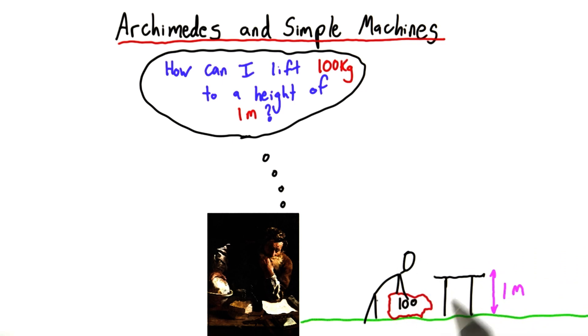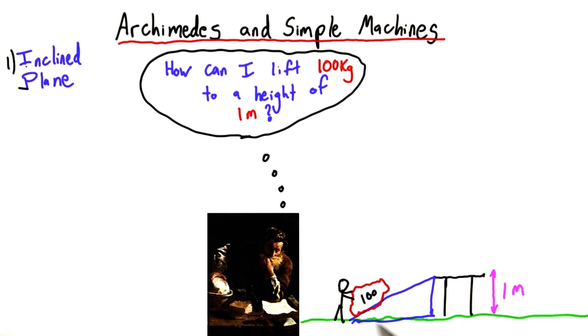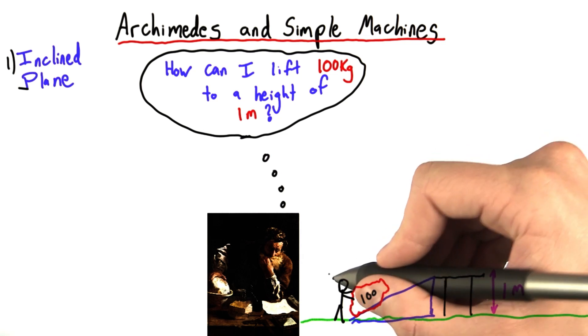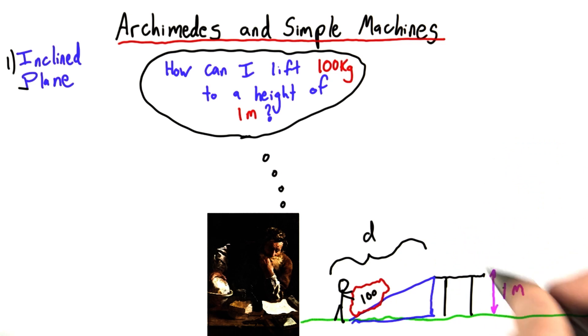Archimedes, however, realized there's better ways to solve this problem. One way is to use an incline plane, and we analyzed the incline plane a little bit in the previous problem set. When we use an incline plane, we reduce the force we have to push with, though at an expense. We have to push over a longer distance. Before, we had to lift 1 meter, but now we have to push a distance that's greater than 1 meter.